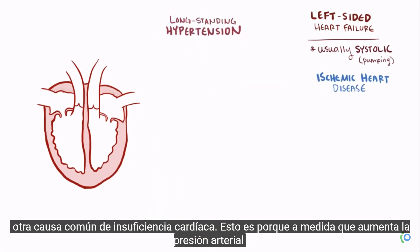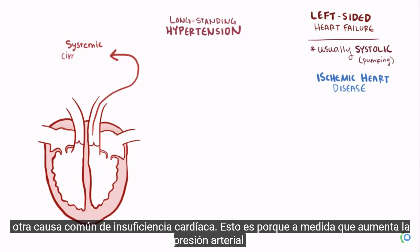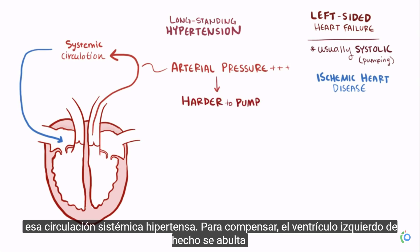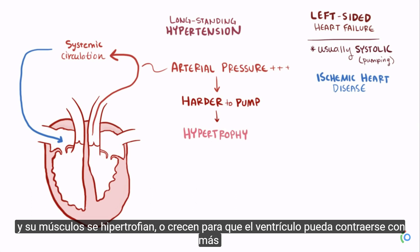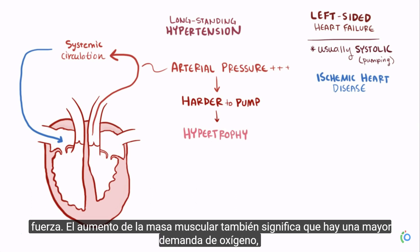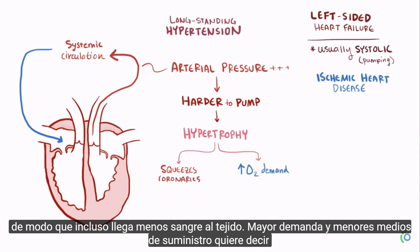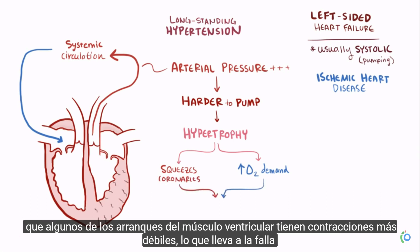Long-standing hypertension is another common cause of heart failure. As arterial pressure increases in the systemic circulation, it gets harder for the left ventricle to pump blood out. To compensate, the left ventricle bulks up and its muscles hypertrophy. The increased muscle mass also demands more oxygen, while the coronaries get squeezed down by the extra muscle, delivering even less blood to the tissue. More demand and reduced supply causes weaker contractions, leading to systolic failure.